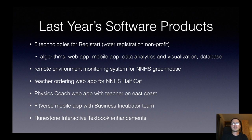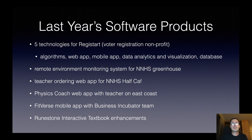To give you an idea of what these software products might look like, here are the ones developed by students in last year's class. One class period had five different teams do something unique — all building different technologies that connected together for one specific product owner: Registart, a non-profit focused on getting high school seniors to register to vote. These students developed algorithms, a web app, a mobile app, data analytics and visualizations, and built out a database to help Registart grow their program throughout the country. In my other class period, they did five totally different projects — which is really more typical.